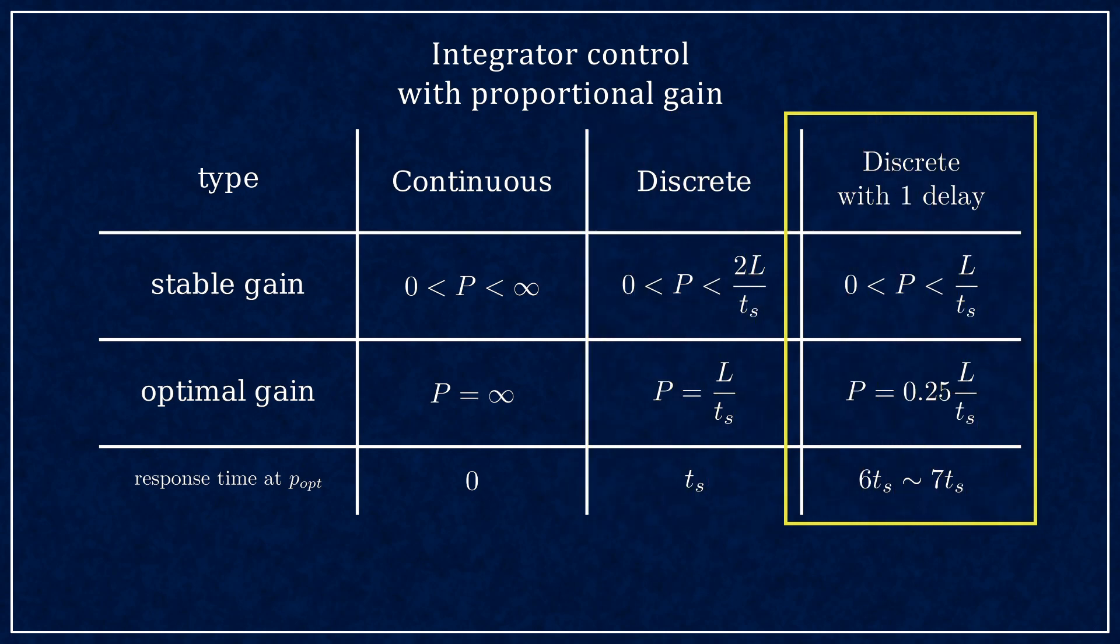But if you introduce a unit delay, you lose half of your available gain. What was ideal without delay is now borderline unstable and the theoretical ideal gain yields a response time of about 6 or 7 steps.